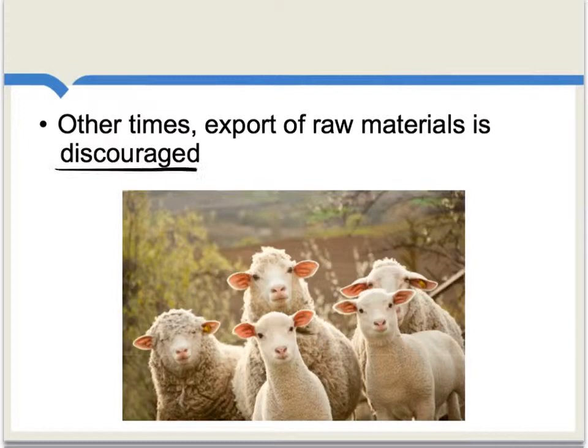Smith also considers how the export of raw materials under mercantilism is sometimes discouraged. It is hoped that those raw materials stay at home to produce valuable goods and services for a later export. One example Smith gives is British laws which made it harder to export wool to other countries. Smith gives some striking examples of just the lengths that regulation went to in order to discourage the export of wool in England.